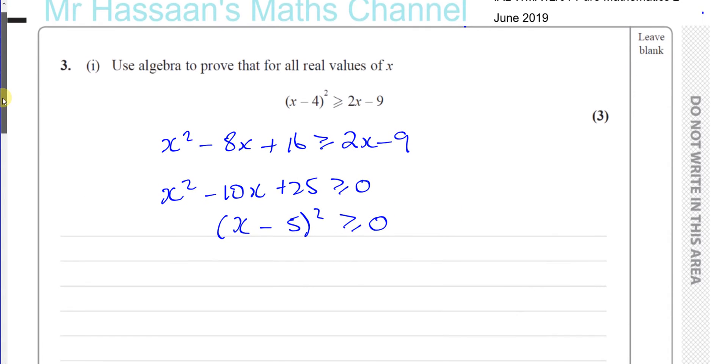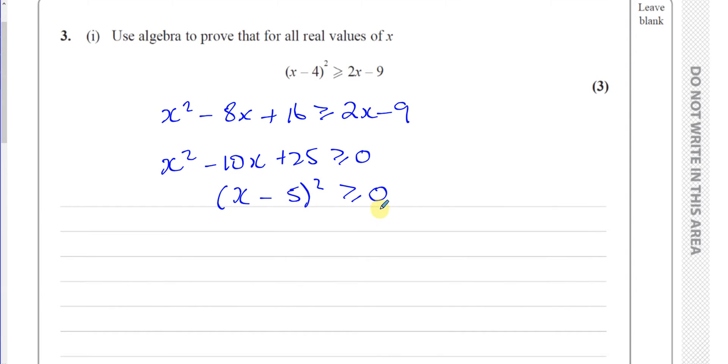Now, this is something that we can use because we know that this is definitely true. And a little explanation will be needed is that for all real x values, x minus 5 squared must be greater than or equal to 0. So why? Because any real number squared...